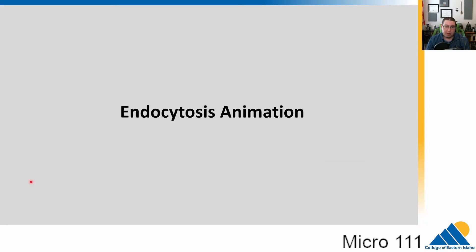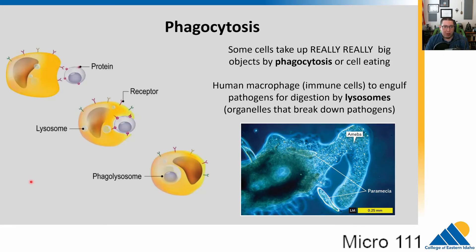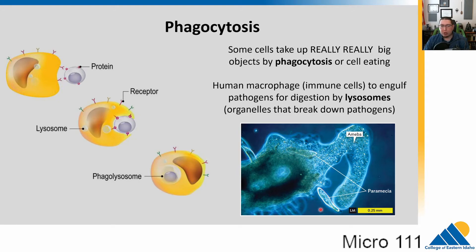Endocytosis can be used to bring lots of things in. There is a specialized type of endocytosis that we call phagocytosis. Phago means to eat, so this is cellular eating. This is what some eukaryotic parasites like amoebas do to actually bring in their food, and their food could be things like bacteria.